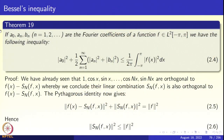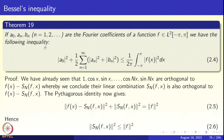Theorem 19: a0, an, and bn have the usual meanings — they are the Fourier coefficients of an L2 function. Then we have the inequality: mod(a0) squared plus one-half times the summation from n=1 to infinity of mod(an) squared plus mod(bn) squared, is less than or equal to the average value 1/(2π) integral from −π to π of |f(x)|² dx. We have already seen that 1, cos(x), sin(x), cos(nx), sin(nx) are orthogonal to f(x) minus the nth partial sum.